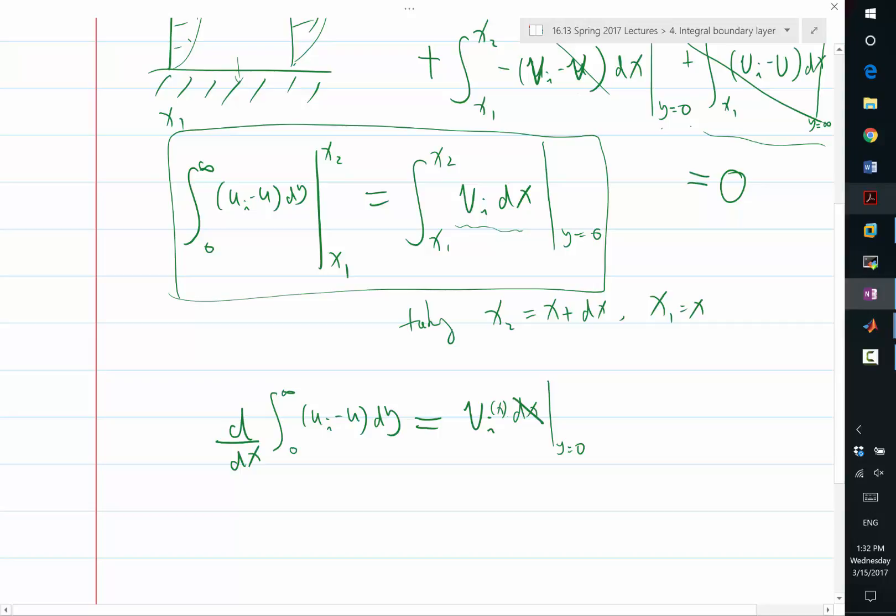And this can be also seen as a kind of motivation for the integral method, for why we introduce the inviscid equivalent flow. Because we said that in order for me to derive an equation that is insensitive to the definition of the edge of the boundary layer, we want to look at the difference between the edge velocity and the viscous boundary layer velocity flow field.